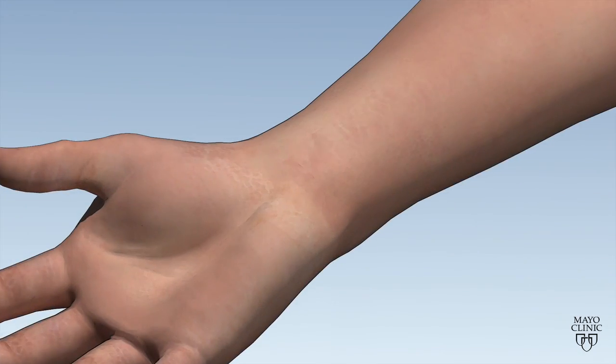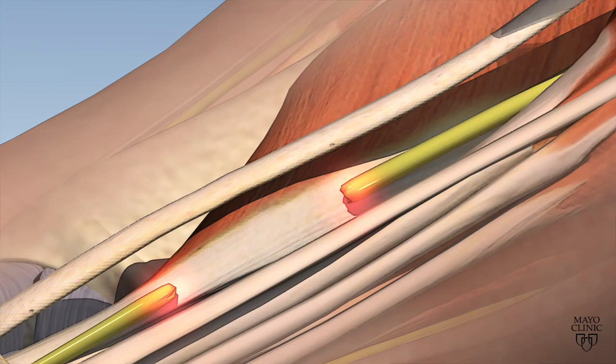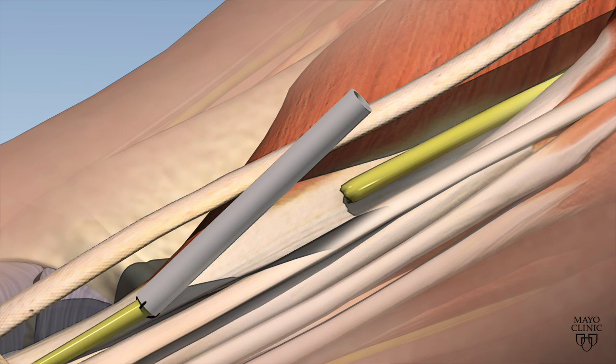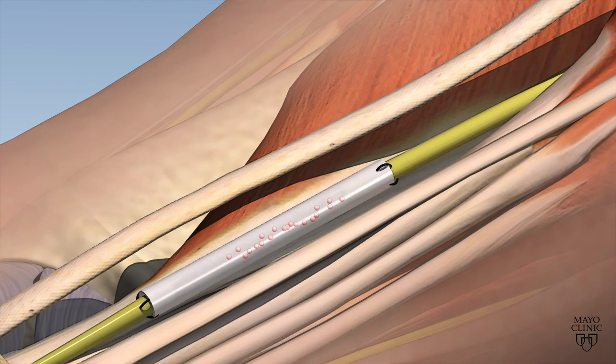To repair the nerve, the patient undergoes surgery. One end of the scaffold is attached to the downstream end of the damaged nerve. The reprogrammed stem cells are injected into the other end, which is then sutured in place.